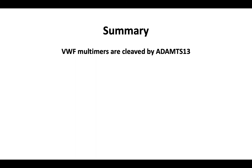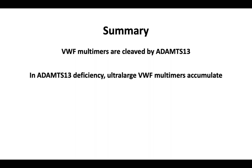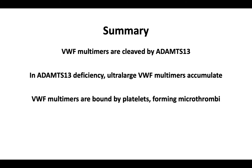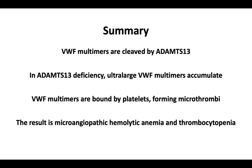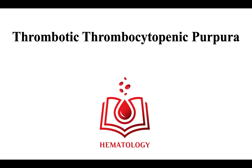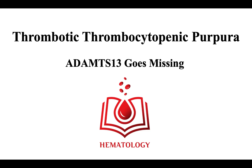In summary, over the last few minutes of this video, we discussed the following points. Von Willebrand factor multimers are cleaved by ADAMTS-13. In ADAMTS-13 deficiency, ultra-large multimers accumulate. Von Willebrand factor multimers are bound by platelets forming microthrombi, and the result is microangiopathic hemolytic anemia and thrombocytopenia. This brings us to the end of Part 1: the basics of the underlying mechanisms of ADAMTS-13 deficiency, which leads to the clinical manifestations of thrombotic thrombocytopenic purpura.